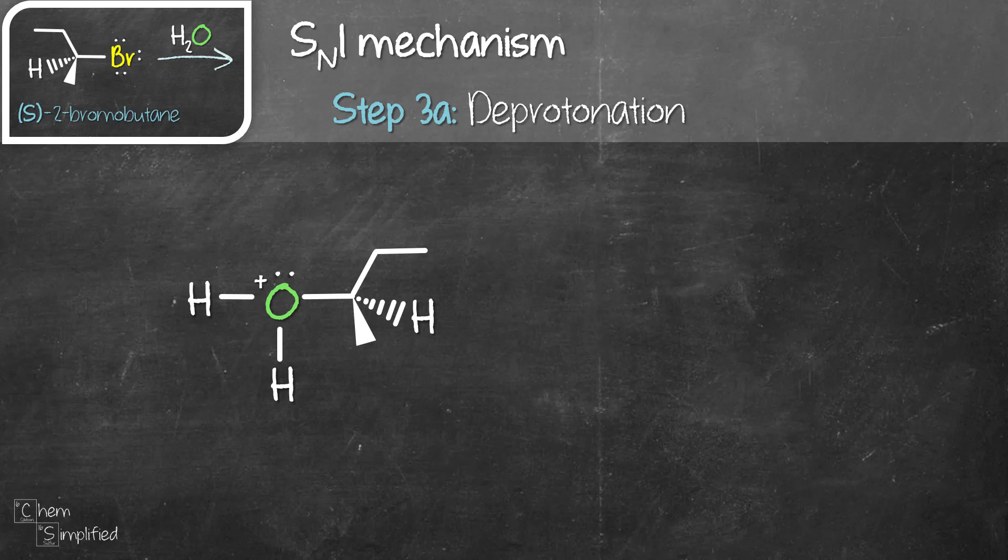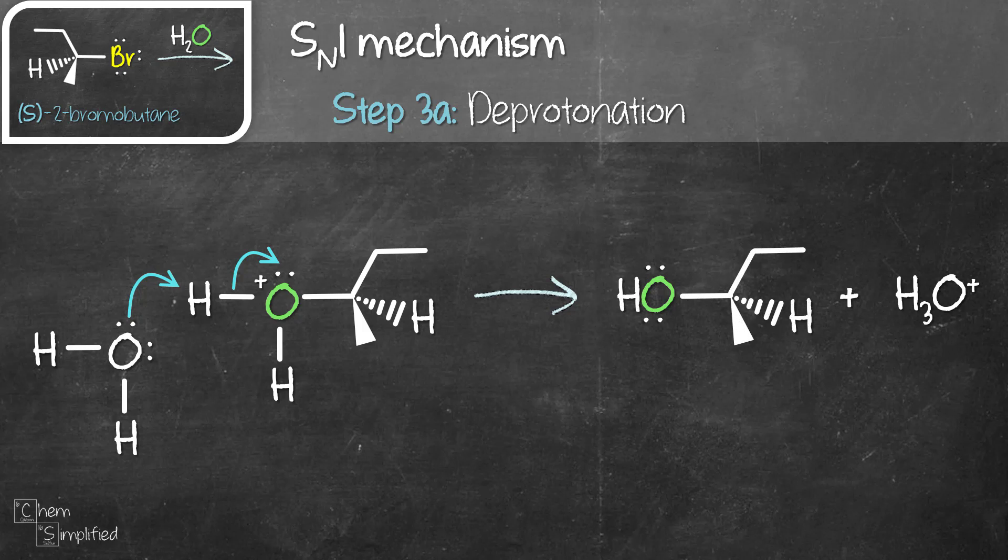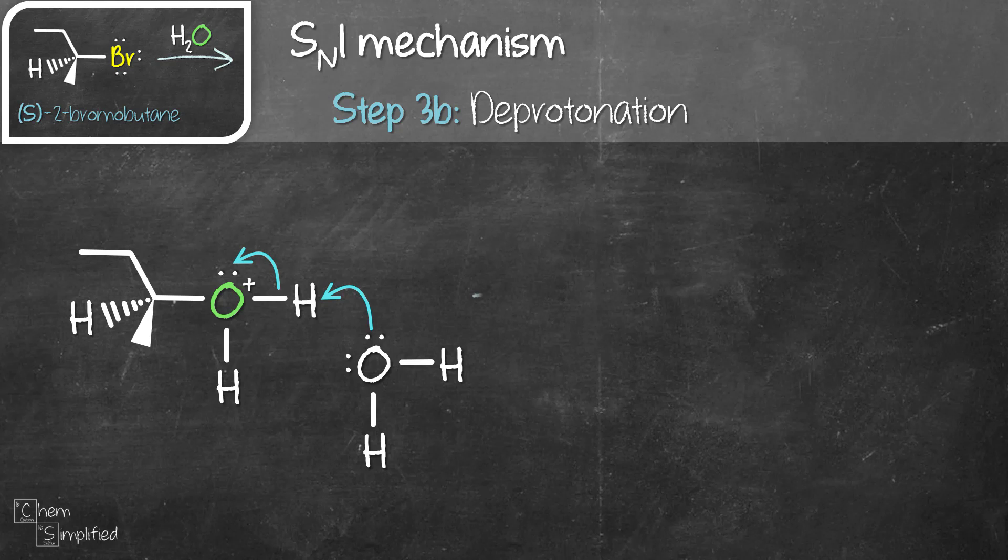We'll use water to remove that extra proton from our intermediate, and we call this step deprotonation. We do this for one product and get R-2-butanol, then repeat the same process for the other intermediate and get S-2-butanol.